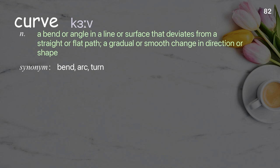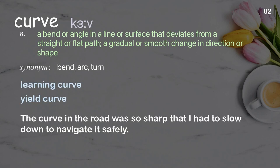Curve: A bend or angle in a line or surface that deviates from a straight or flat path; a gradual or smooth change in direction or shape. Examples: Learning curve. Yield curve. The curve in the road was so sharp that I had to slow down to navigate it safely.